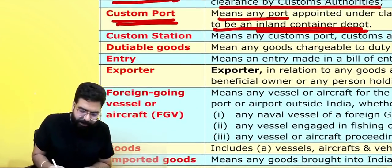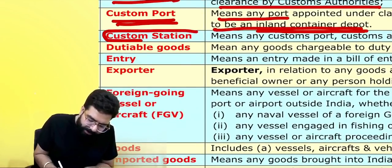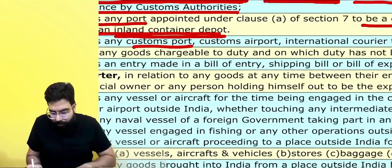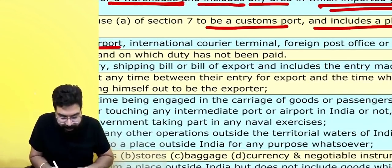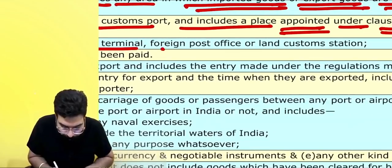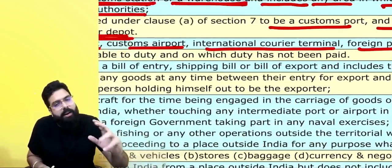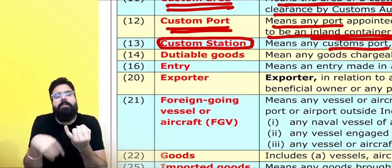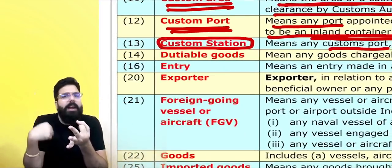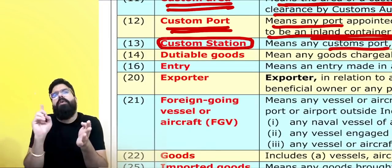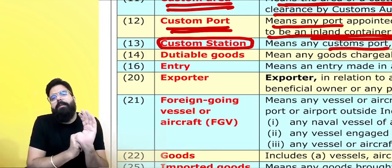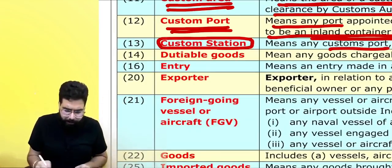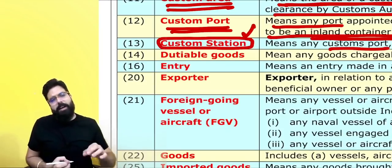What do you mean by a custom station? A custom station means any port, airport, international courier terminal, foreign post office, or land customs station. When I say custom station, it can be a custom port, a custom airport, a land customs station, a foreign post office, or an international courier terminal from where couriers are dispatched. All of these can be a custom station.